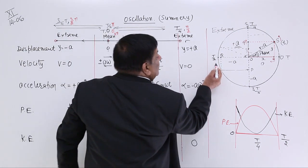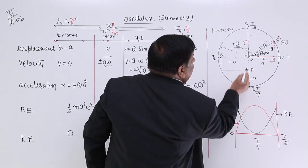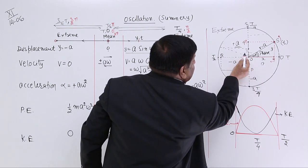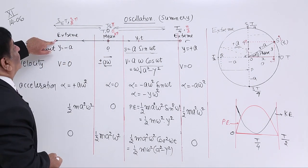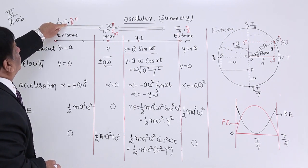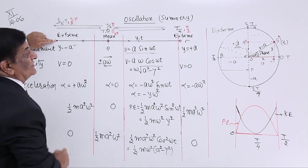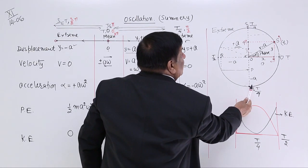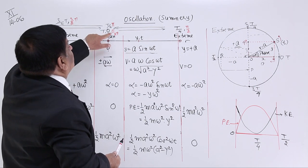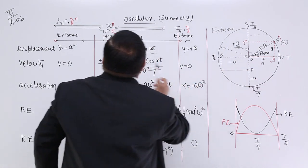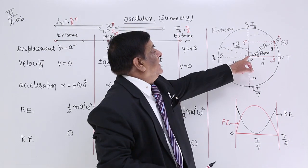After another T/4, at time 3T/4, the particle reaches the other extreme where displacement is minus A and the phase is 3π/2 (one and a half pi). Then it comes all the way back to the mean position: total time passed is T, total phase is 2π, and displacement is 0.